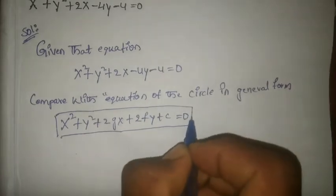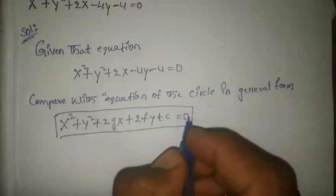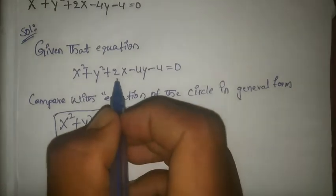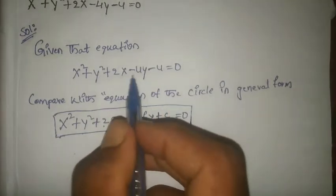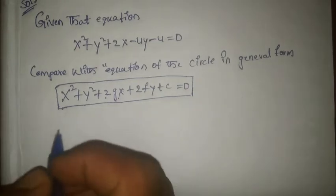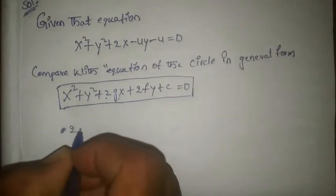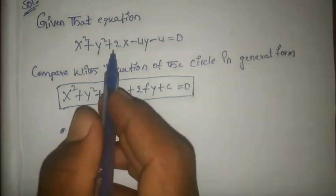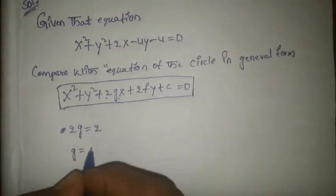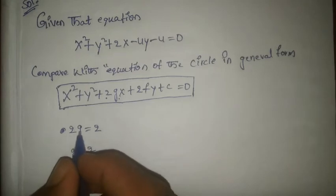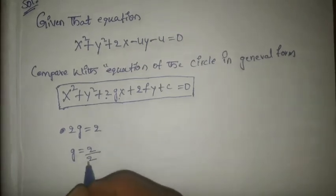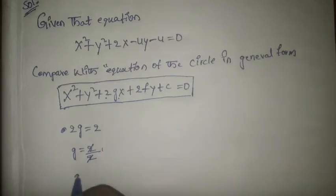Comparing, 2gx = 2x, so 2g = 2. When we transpose 2 to the right side it becomes division, so g = 2/2, that is g = 1.